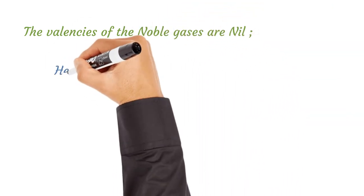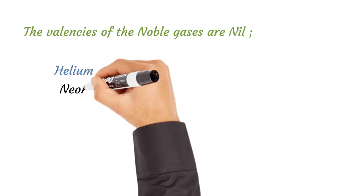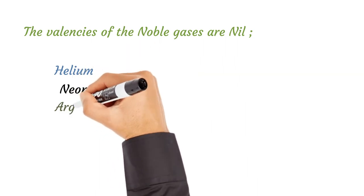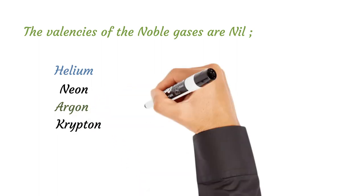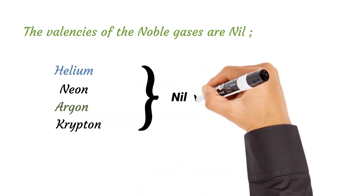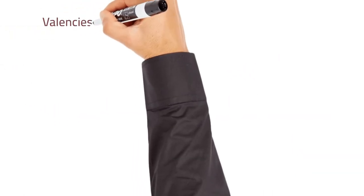Valencies of the noble gases are nil, that is they are zero. Within the elements, some noble gases are given below: helium, neon, argon and krypton. Their valencies are nil or zero.